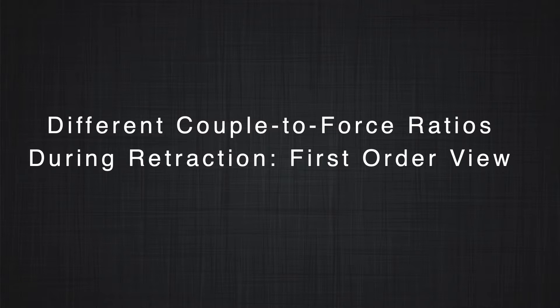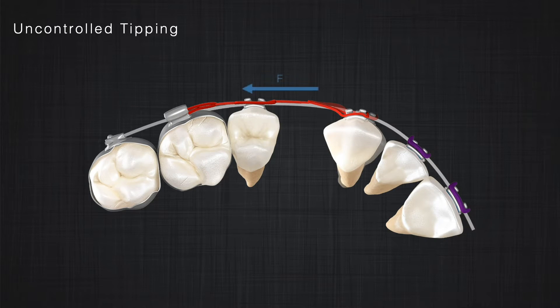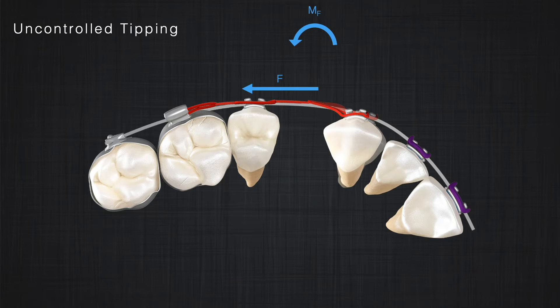Do we have the same system in the first-order view? Yes. When applying a force on the canine in the first-order view, the force applies away from the center of resistance. Remember, the center of resistance in the first-order view is almost in the center of the occlusal plate. Therefore, a small moment appears in the system — this moment is smaller than the moment we have in the second-order view.